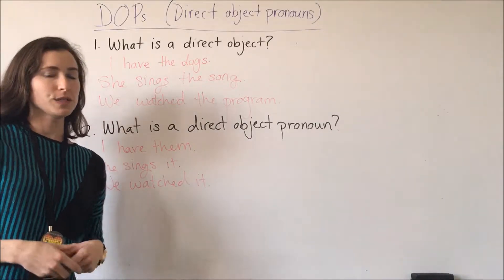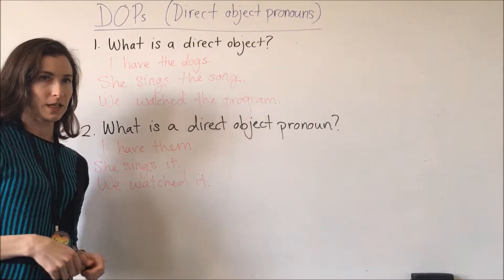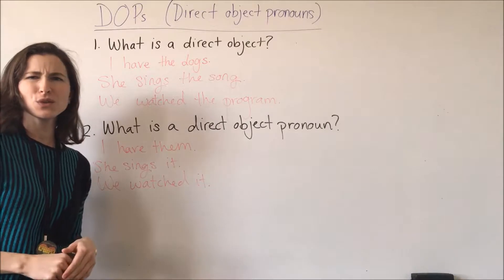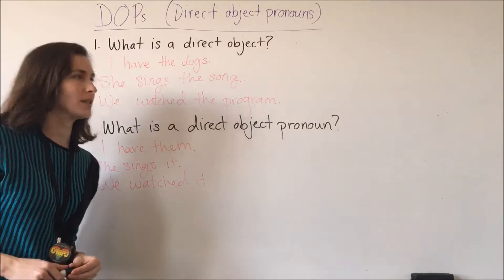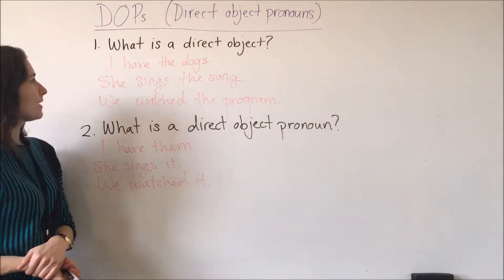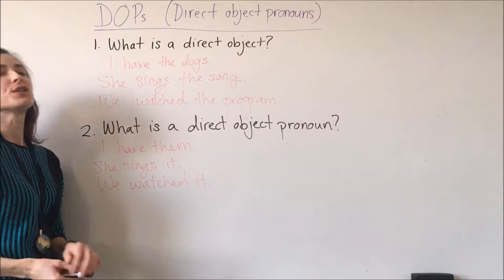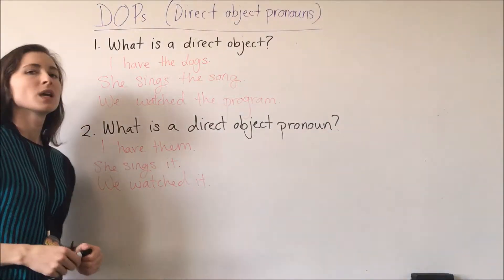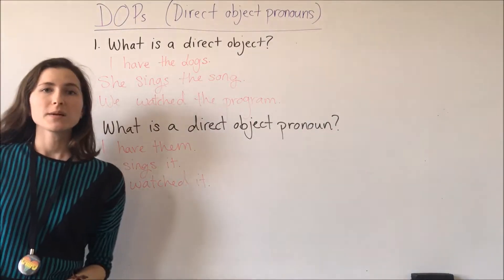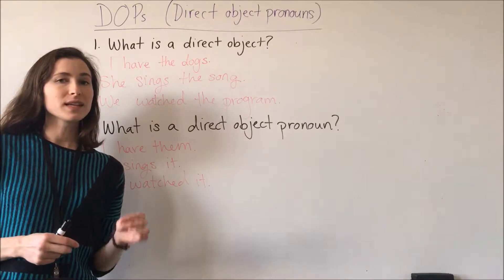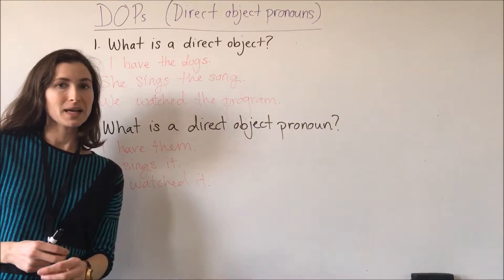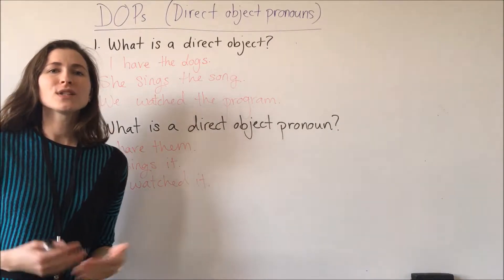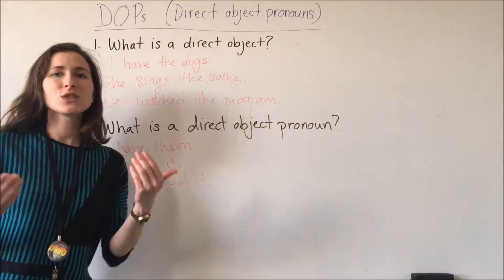Before we talk about DOPs in Spanish — direct object pronouns — we need to review what a direct object is. I have the dogs, she sings the song, we watched the program. A direct object is the thing that is directly impacted by the action of the verb. So we can ask ourselves: what is verbed?